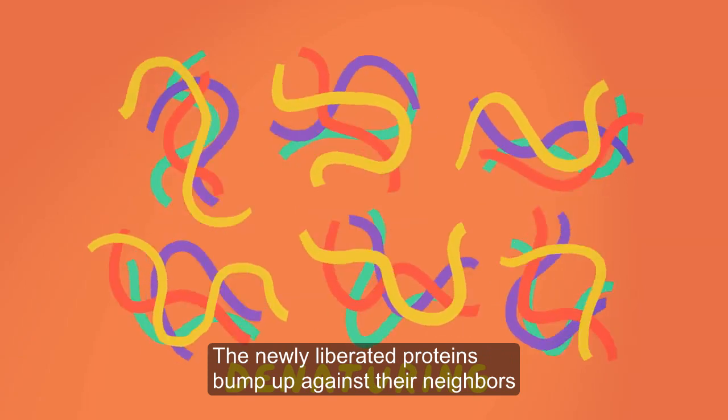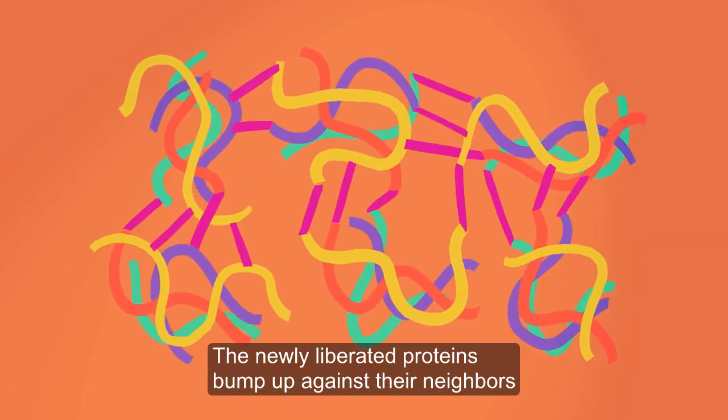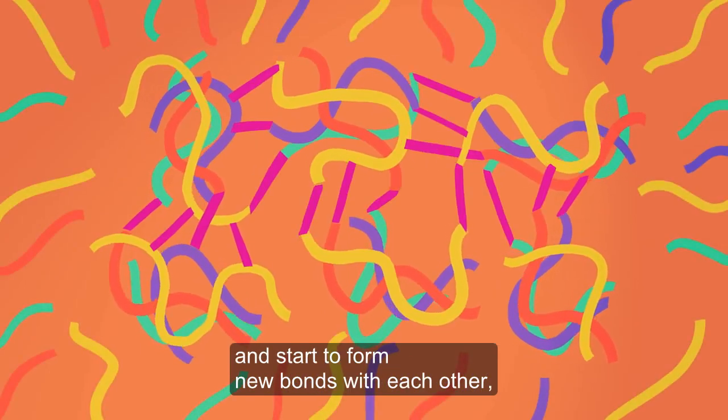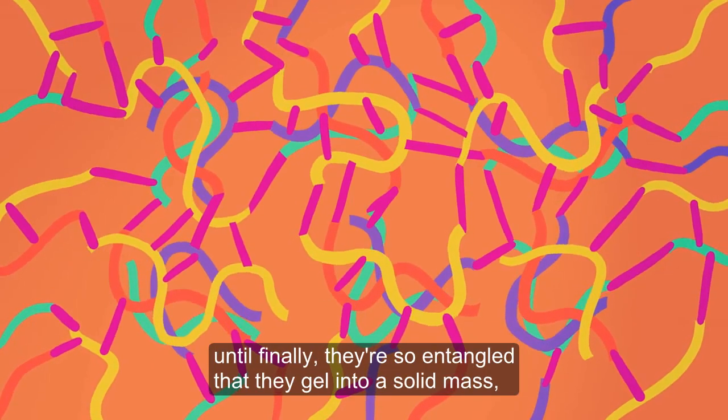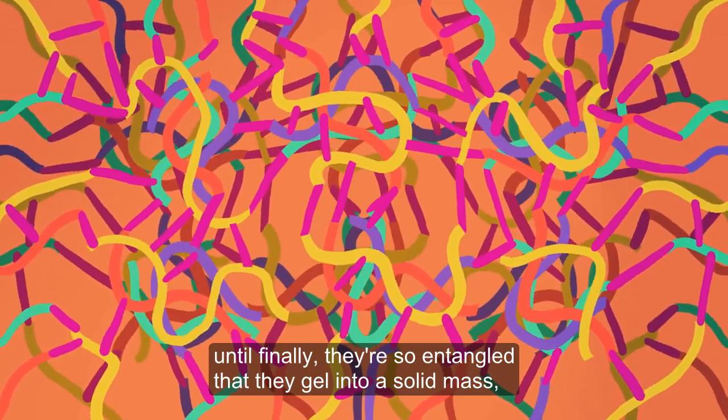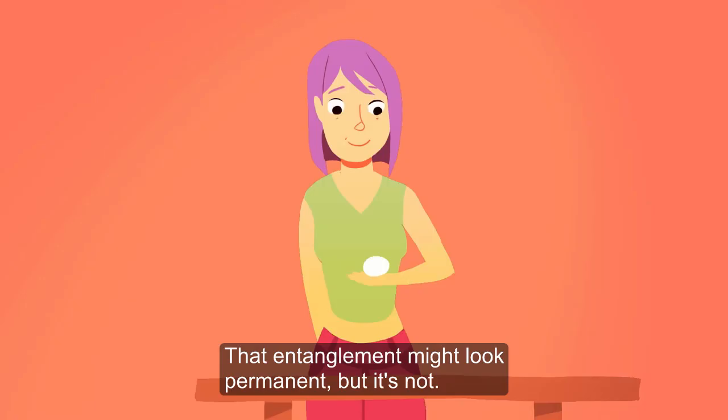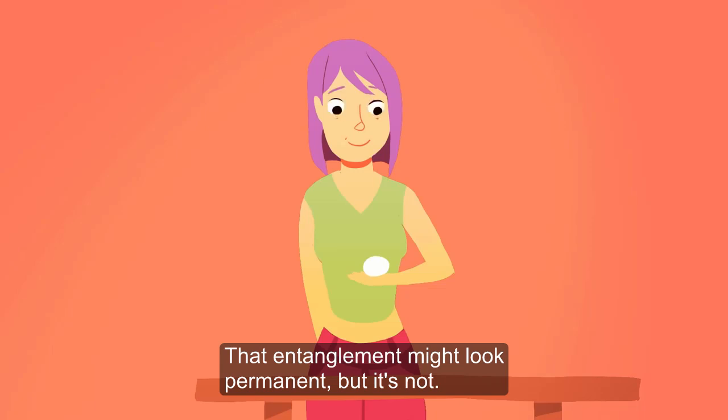The newly liberated proteins bump up against their neighbors and start to form new bonds with each other, more and more as the heat increases, until finally they're so entangled that they gel into a solid mass, a boiled egg. That entanglement might look permanent, but it's not.